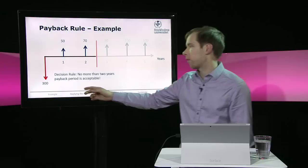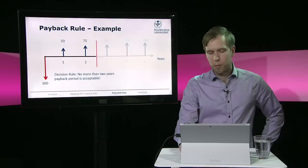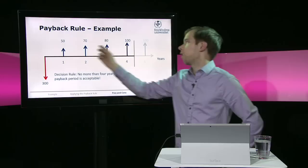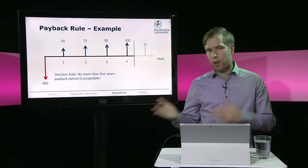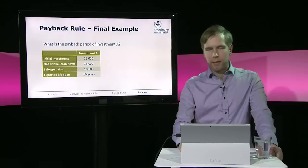For example, if we have a decision rule that says no more than two years is acceptable, this investment would not be good, because we need to get 300 back within two years, and after two years we only received 120. Whatever happens later, it's not important in this case. But if we say we need to get it back in four years, that's acceptable — and we found earlier that it pays back in four years, so this is probably a good investment. This arbitrary choice of the cutoff length can make the difference between calling it a good investment or a bad investment.